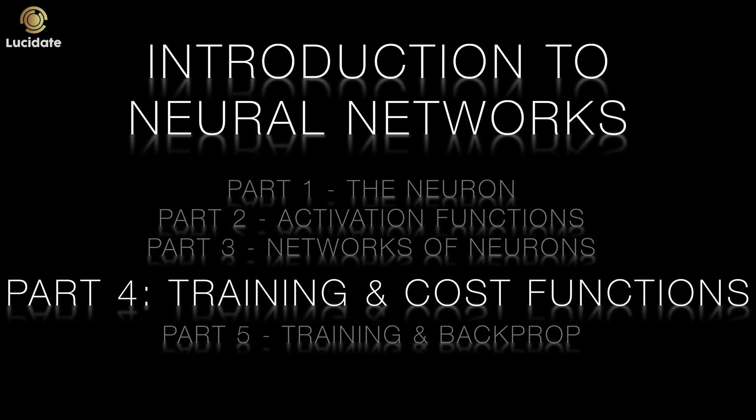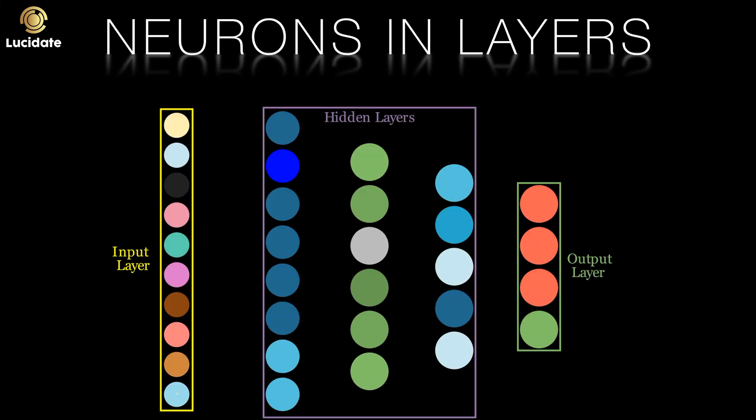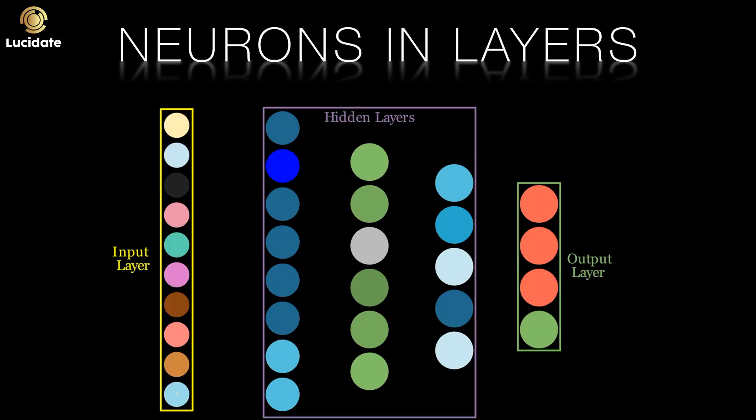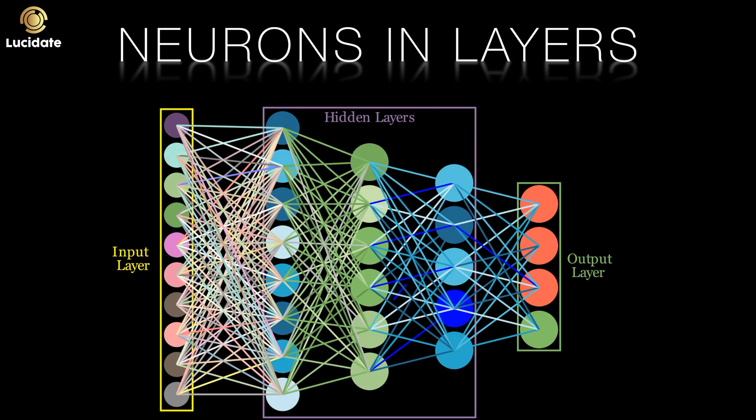In this fourth post on neural networks we're going to see how neural networks learn or are trained. In the first post we looked at the anatomy of a neuron, including its inputs, outputs, weights, a bias and an activation function. The second post took a closer look at non-linear activation functions and in the third installment we saw how we could link neurons in layers, with the activations of neurons in one layer feeding the neurons in the next, all the way until an output layer. The output layer provides the results of the task that the network has been trained to learn.